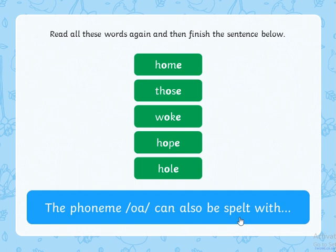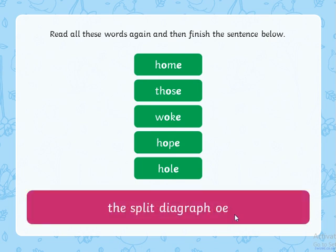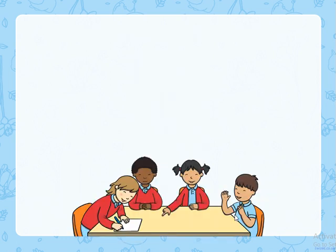The phoneme O can also be spelt with — that's right — the split digraph O. Well done. Until next time, take care.